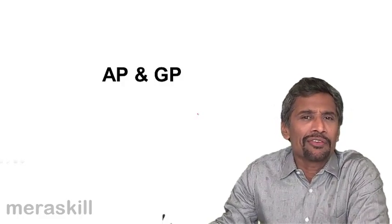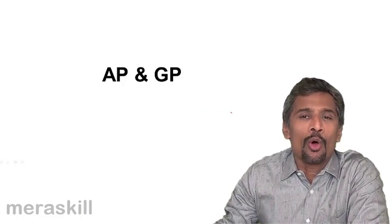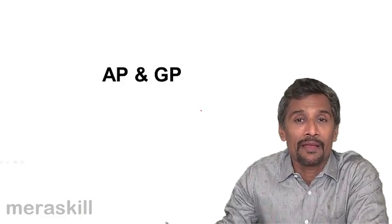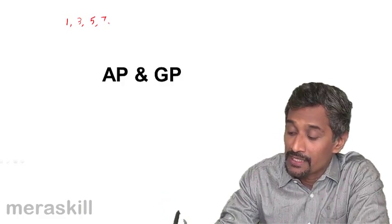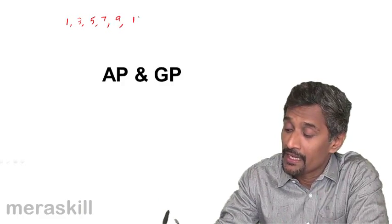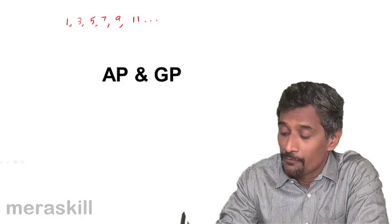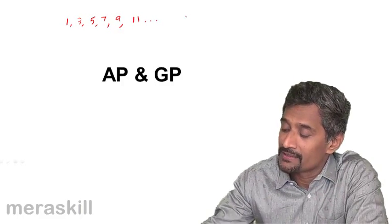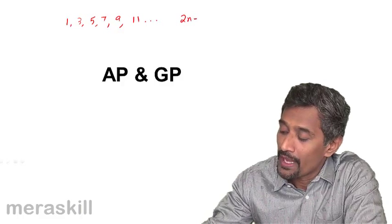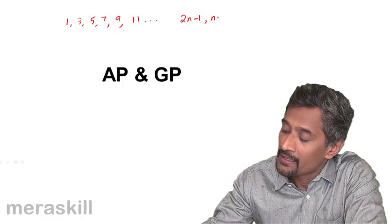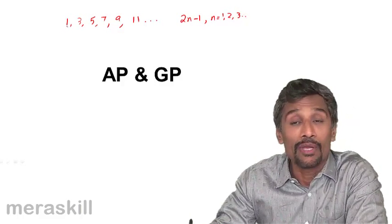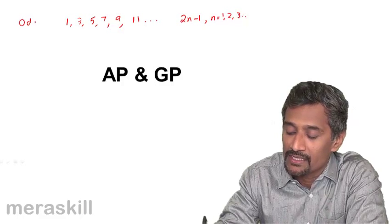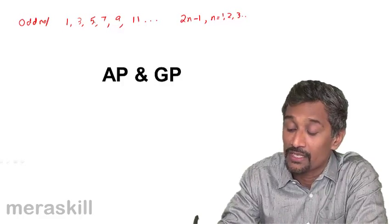A sequence in general means it is just a long line of numbers, all of which would satisfy a specific condition. Say for example, you may have 1, 3, 5, 7, 9, 11, and so on and so forth. If you observe, all of these satisfy the condition 2n-1, where you take n as 1 and all the natural numbers, and you get this, which in short is a set of odd numbers. So this is a kind of a sequence.